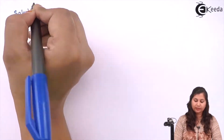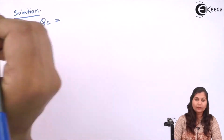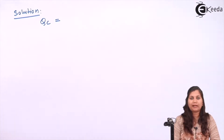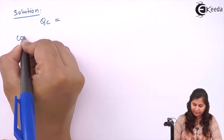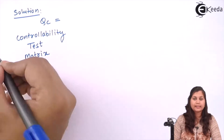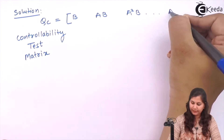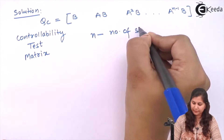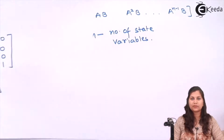We know that to check controllability we have to find out whether the controllability test matrix QC is singular or non-singular — that is, whether the rank of this controllability matrix is equal to the number of state variables of the system. In this question we have the number of state variables as 4.